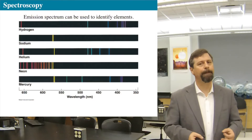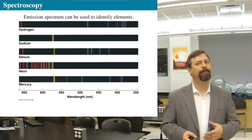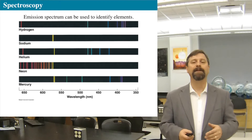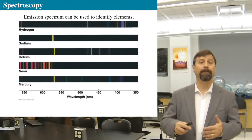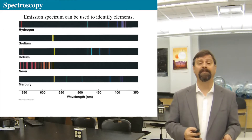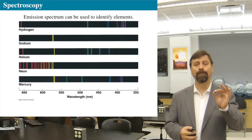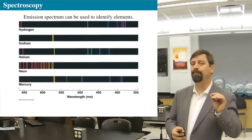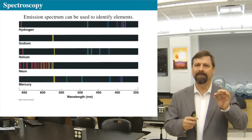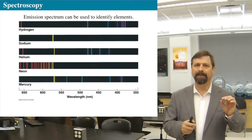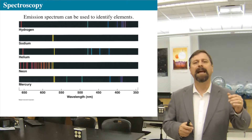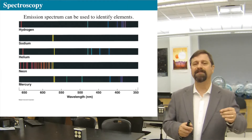Emission spectra are fascinating. You can get them by taking sodium chloride — table salt — holding a bit of it on a piece of metal over a Bunsen burner, and heating it up until it glows.